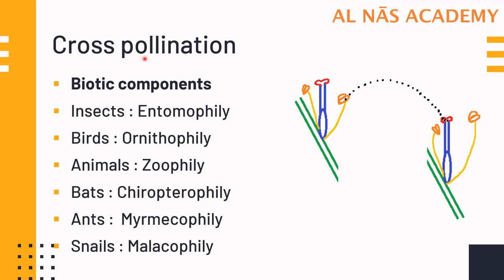Cross-pollination will take place only when these agencies are present to transfer the pollens. However, flowers have undergone many adaptations to ensure pollination takes place, whether through biotic or abiotic components. There are various adaptations that flowers have undergone to ensure pollination takes place with the help of these agencies.